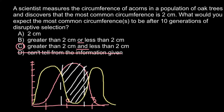Answer A would be an example of stabilizing selection, when selection would be against the extreme phenotypes. So this wave would be bigger in the middle and smaller on both extreme sides.